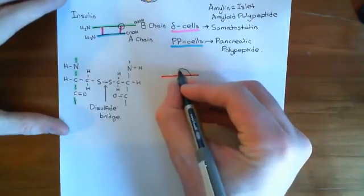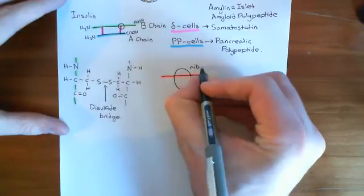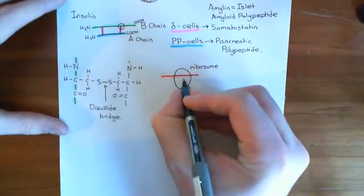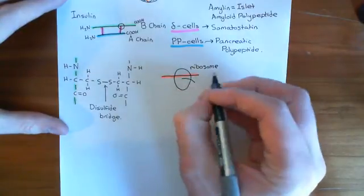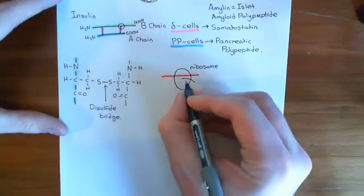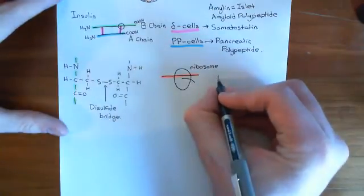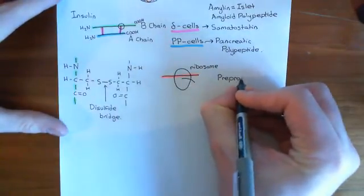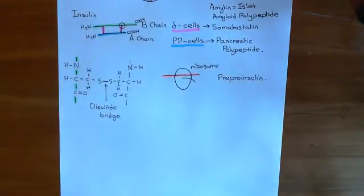The mRNA will be translated by a ribosome, and the ribosome will synthesize the polypeptide coded for by the mRNA. It will make one huge protein, and this huge protein is what's called pre-proinsulin. So the first polypeptide you make in the synthesis of insulin is known as pre-proinsulin.